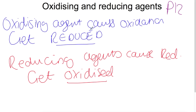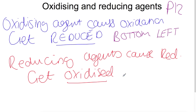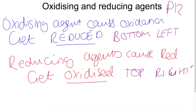If you are looking for a strong oxidising agent you will find these at the bottom left — for example, fluorine. If you are looking for a strong reducing agent you should look at the top right — for example, lithium.